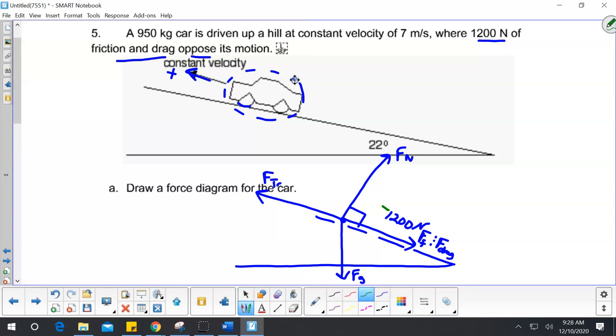Now, I need to divide one of my forces into vectors. The force traction, force normal, and force friction are all 90 degrees. So it's the force gravity I'm going to divide. So this is force gravity in the y direction, which is into the ramp. And then down the ramp would be force gravity in the x direction.